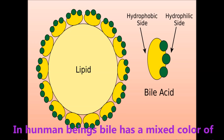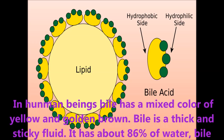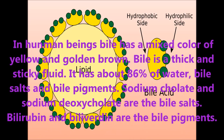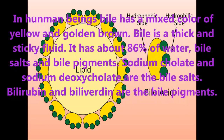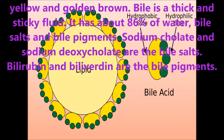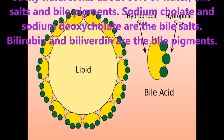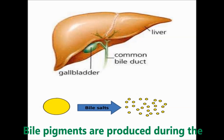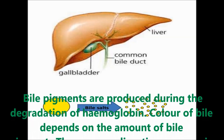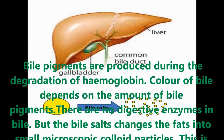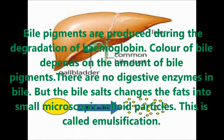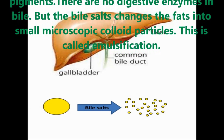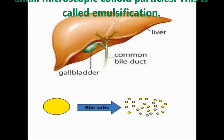In human beings, bile has a mixed color of yellow and golden brown. It is a thick and sticky fluid containing about 86% water, bile salts and bile pigments. Sodium cholate and sodium deoxycholate are the bile salts present in bile. Bilirubin and biliverdin are the bile pigments, produced during the degradation of hemoglobin, and the color of bile depends on the amount of bile pigments. There are no digestive enzymes in bile, but the bile salts change fats into small microscopic particles — a process called emulsification.